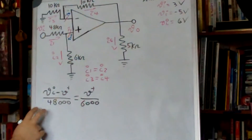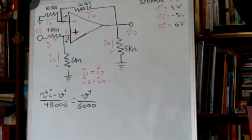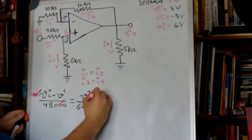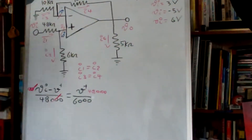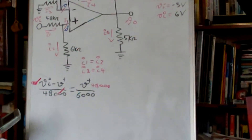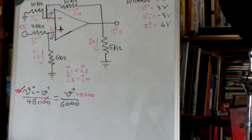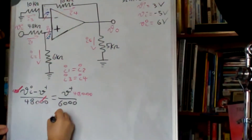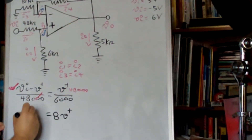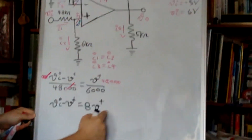I'm going to multiply both sides by 48k to simplify. Multiplying by 48k gives us 8, so Vi minus V plus equals 8 times V plus. Adding V plus to the other side gives 9V plus, and I have a relation between Vi and V plus.